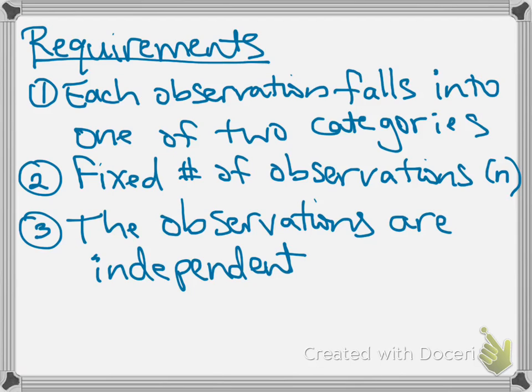Requirement number three is that the observations have to be independent. And we've talked about independence quite a bit already this year. That just means that the outcome of any one observation cannot affect the outcome of any of the other observations.